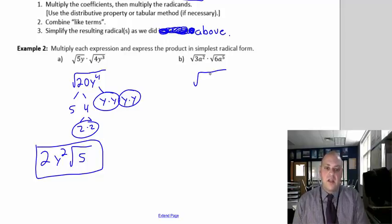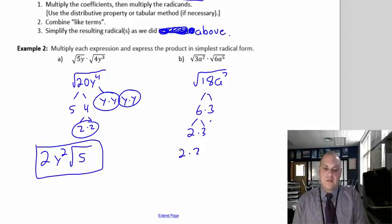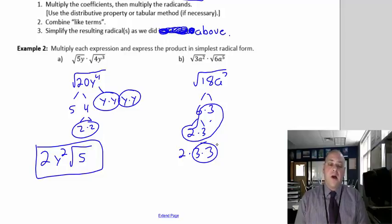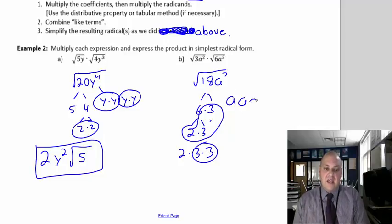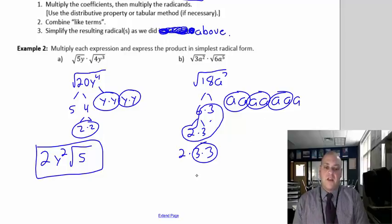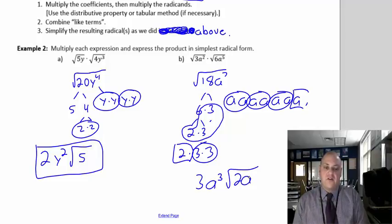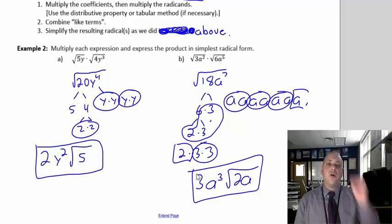This one gives us radical 18 a to the seventh. 18 becomes 6 times 3, and 6 becomes 2 times 3 — so it's 2 times 3 times 3. Only the pair of 3s can come out. a to the seventh is seven a's — there are three pairs with one a left over, so 3 a's come out as a to the third. What comes out: 3 and a to the third. Left in the radical: 2 and a. So the answer is 3a to the third radical 2a.